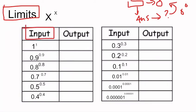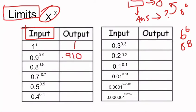In our table, the input is x to the power of x — any number to the power of itself. Starting with 1 to the power of 1, which is simply 1. Then 0.9 to the power of 0.9 gives 0.910. Then 0.8 to the power of 0.8 is 0.837, 0.7 to the power of 0.7 is 0.779, 0.5 to the power of 0.5 is 0.707, and 0.4 to the power of 0.4 is 0.693.